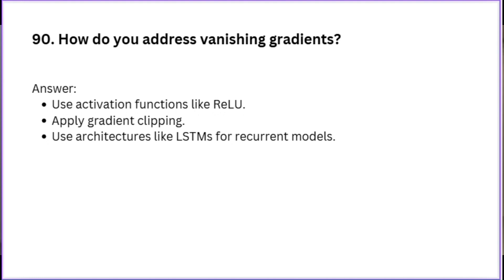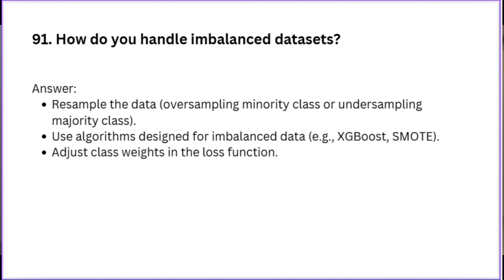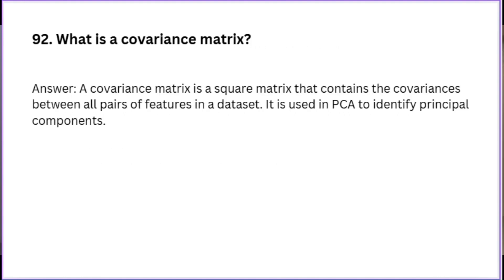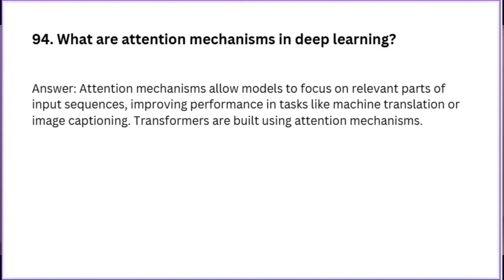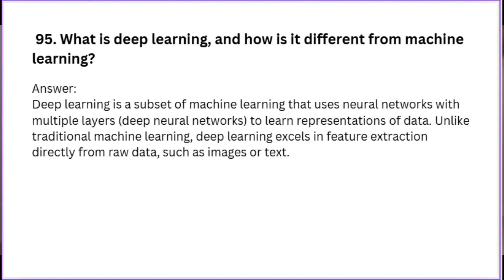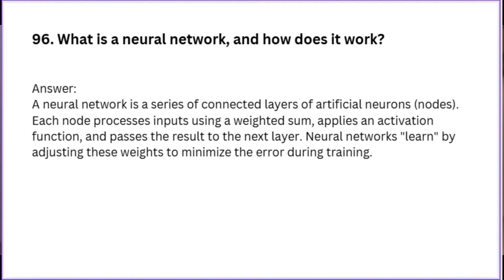How do you address vanishing gradients? How do you handle imbalanced datasets? What is a covariance matrix? What is the KL divergence? What are attention mechanisms in deep learning? What is deep learning and how is it different from machine learning? What is a neural network and how does it work?